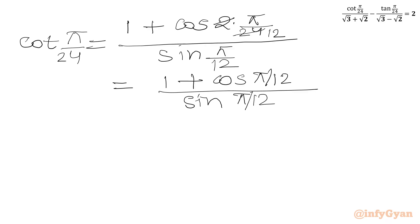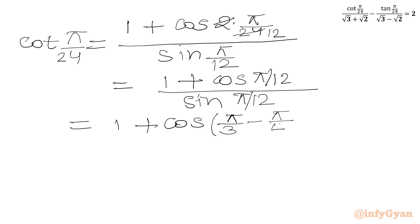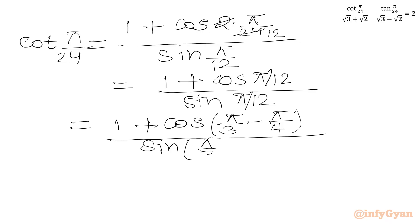Now we will calculate cos(π/12) and sin(π/12). We can write π/12 as π/3 minus π/4, since taking LCM gives (4π - 3π)/12 = π/12. So in the denominator we write sin(π/12) as sin(π/3 - π/4).